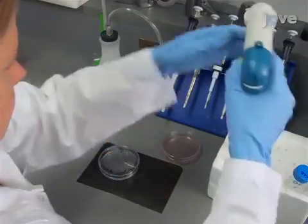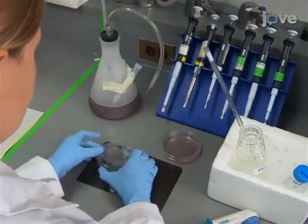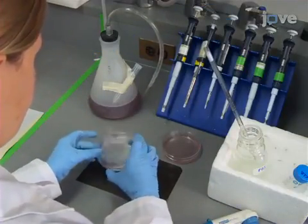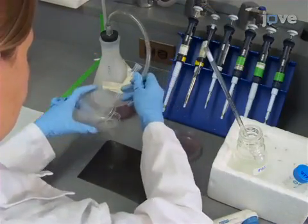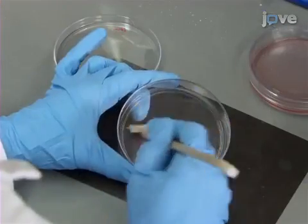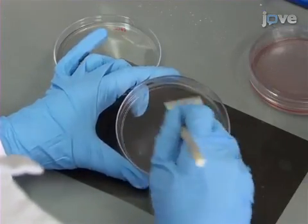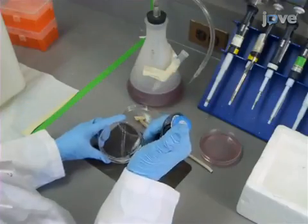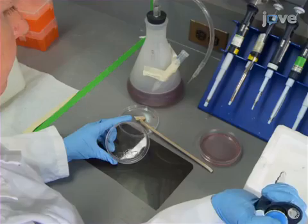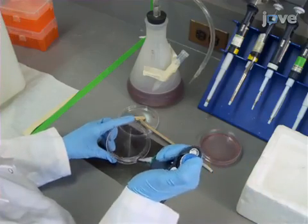For adherent cells grown in dishes, wash the cells twice with ice-cold PBS. Then add one milliliter of ice-cold PBS and harvest the cells with a plastic cell scraper. Transfer the loose cell suspension into a fresh 1.5 milliliter centrifuge tube.